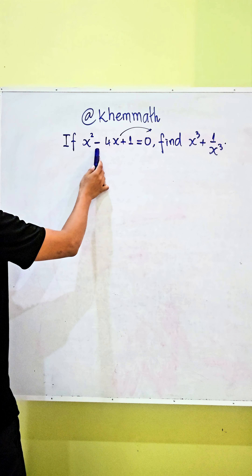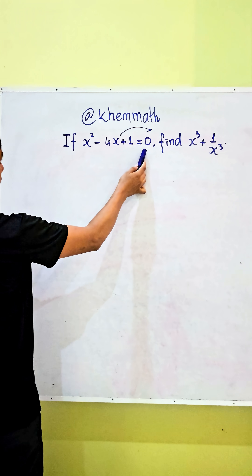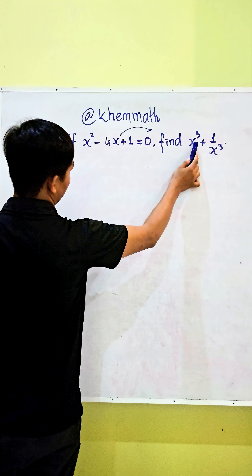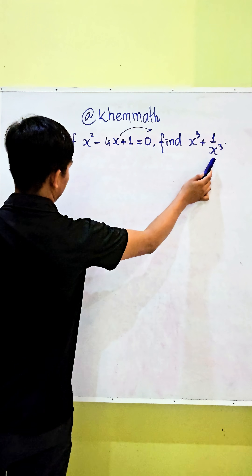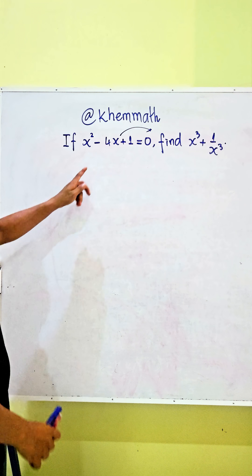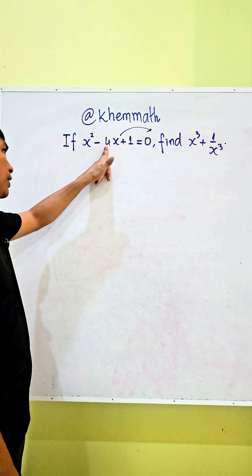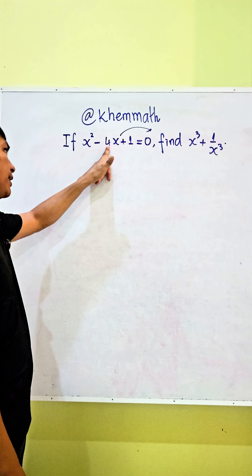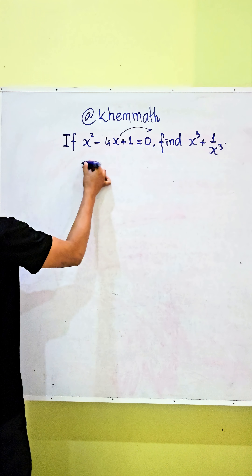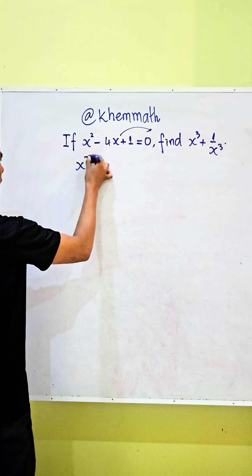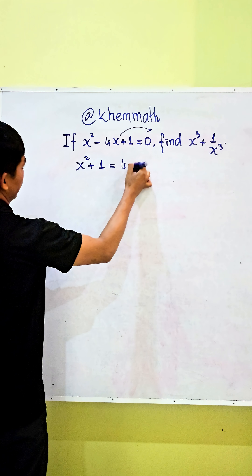If x squared minus 4x plus 1 equals 0, find the value of x cubed plus 1 divided by x cubed. The first step is we use this equation and we move 4x to the right-hand side, so we get x squared plus 1 equals 4x.